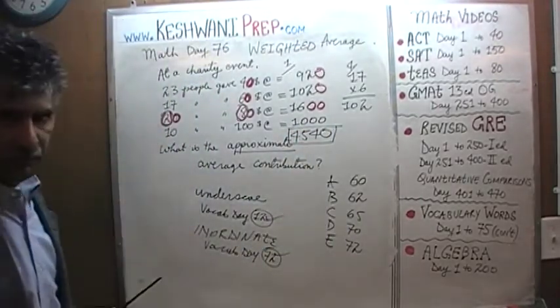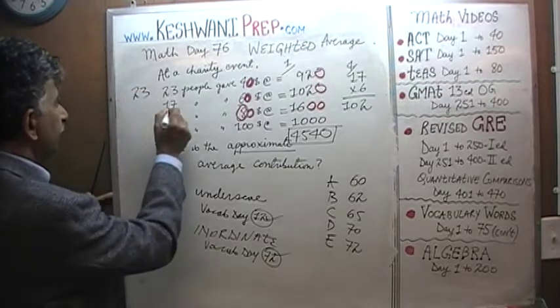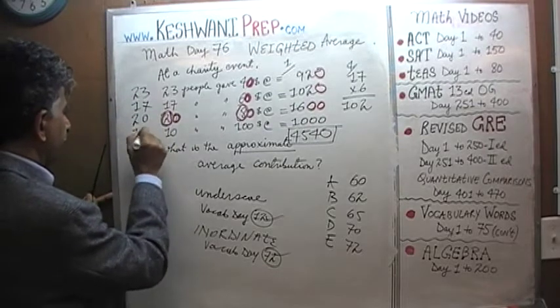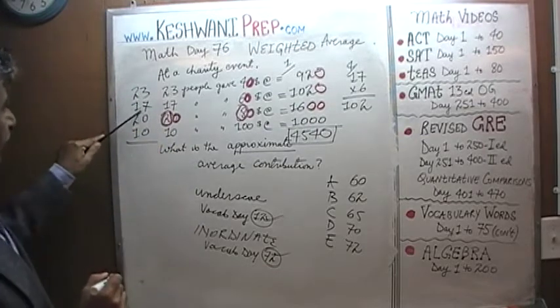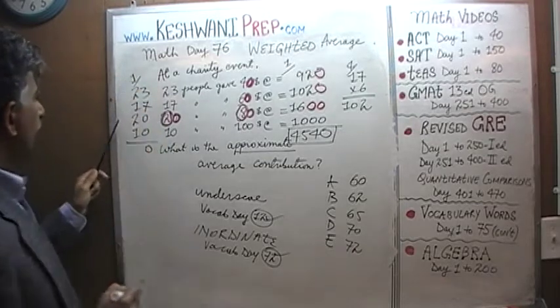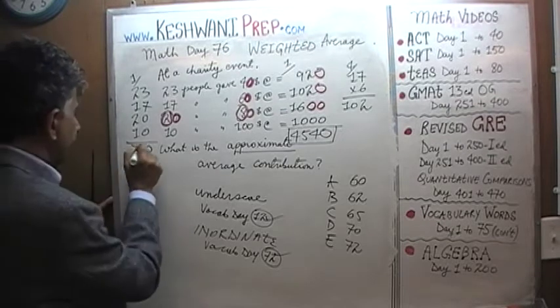Now we have to figure out how many total people we have. 23 people, 17 people, 20 people, and 10 people. That's very easy. 7 plus 3 is 10, so it's 0, carry 1. 2 plus 1 is 3, 3 plus 1 is 4, 4 plus 2 is 6, 6 plus 1 is 7. There are 70 people.